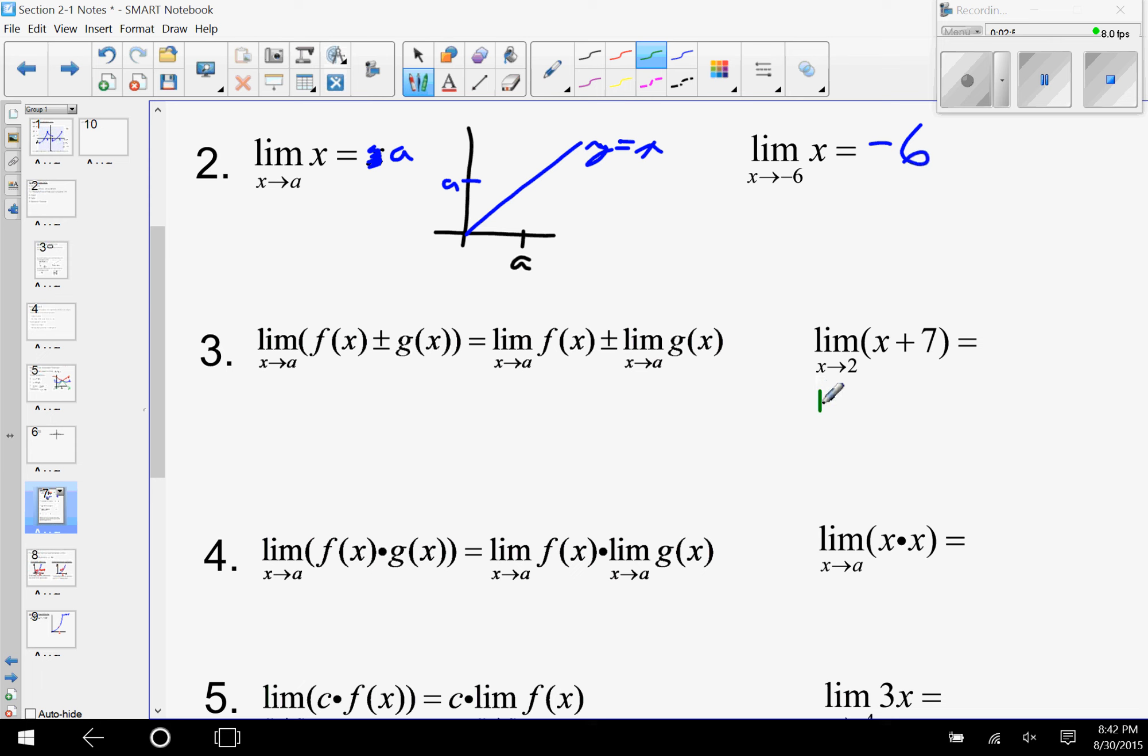I do the limit of each piece and add or subtract those. So if I have the limit as x approaches 2 of x + 7, well that's the same as the limit as x approaches 2 of x plus the limit as x approaches 2 of 7. Using our two previous properties, the limit as x approaches 2 of x is 2, and then the limit of a constant is that constant, so we get 9.